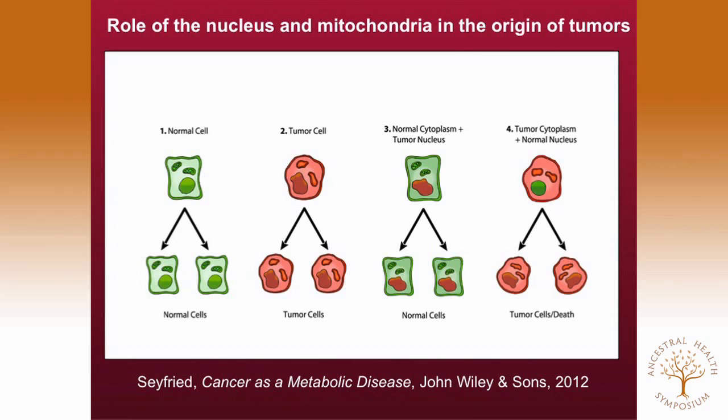If you take the nucleus from the normal cell and put it into the cytoplasm of a cancer cell, you either get dead cells or tumor cells. You don't get normal cells. What these findings indicate is that the mitochondria can suppress tumorigenesis, and that mutations, whatever they happen to be or how they're related, are not the drivers of this disease, regardless of what you might read.